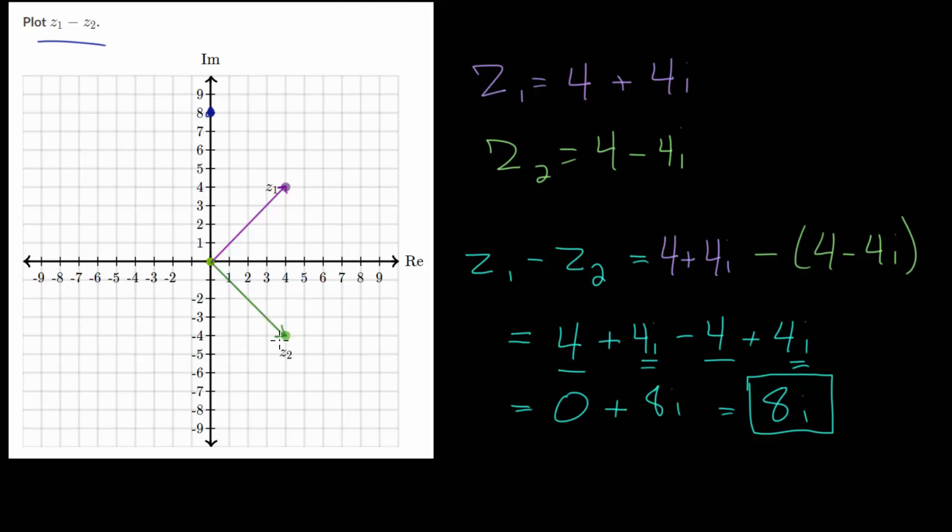With subtraction, it's a little bit more complicated. We want to find the opposite of Z2 and then add that to Z1. The opposite of Z2 will be the vector that has the opposite real part and opposite imaginary part, or you could think of it as rotating this vector 180 degrees. We can find it by finding the opposite real and imaginary parts. The opposite real part is negative 4, the opposite imaginary part is 4, which brings us right about there.